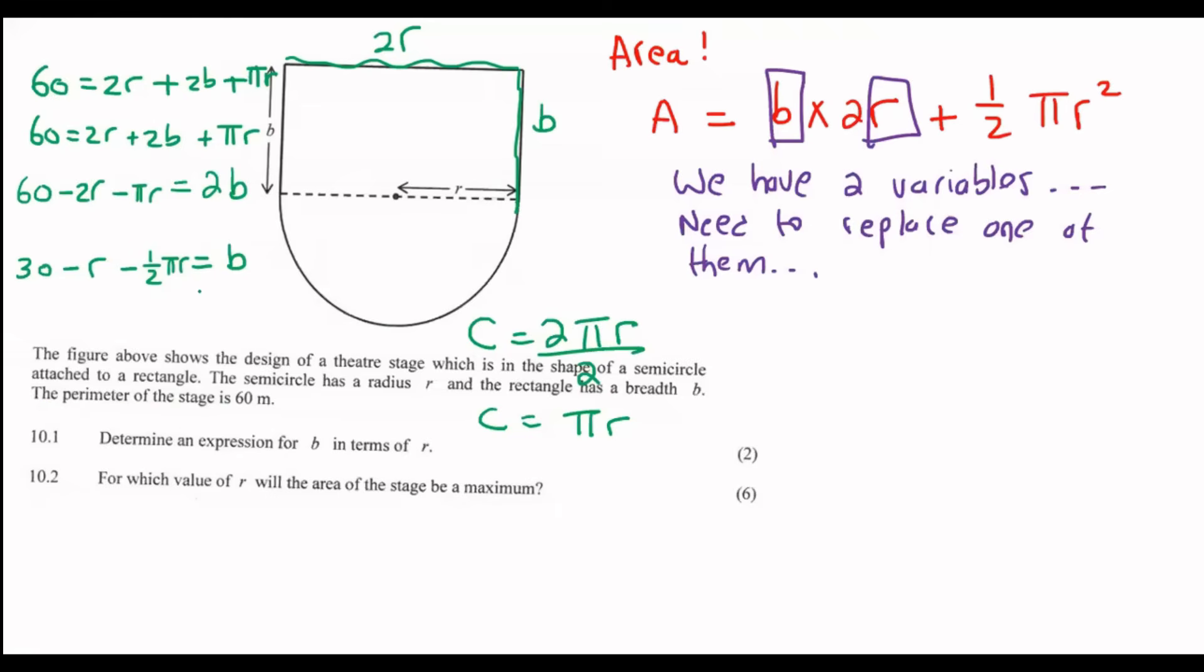So guys, now look what happens. You see how we now have an expression for B? So what you now do is take that expression for B and put it in over there. That's exactly what they asked us to do at 10.1 - determine an expression for B in terms of R. But we needed to do that anyways. That is why I crossed it out. We need to do that anyways. They're just guiding you along in the exam.